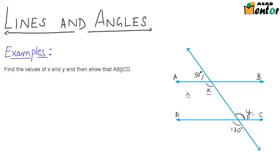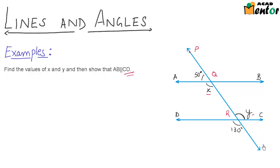We do not yet know that AB is parallel to CD, but we have to prove that they are parallel. First, let's go about finding the values of X and Y. In this figure there are two lines AB and CD, and there is another line which is a transversal but with no labels. So first, let me label this line as P, Q, R, and let this point be S. Now since I have labeled all these points, it will be easier to understand what angles are there and then name them.